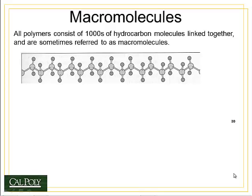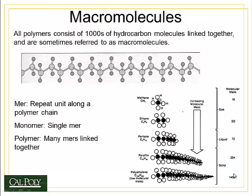Recall that a mer unit is the single building block of a larger polymer. The mer unit of polyethylene consists of two carbon atoms with one hydrogen atom coming off each side of the carbon atom. If we link those mer units together, we end up with a very long chain of mers called a polymer.